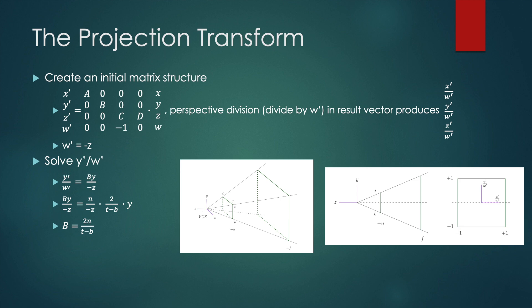Then we can derive a analogously to get 2n over r minus l.